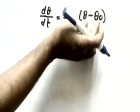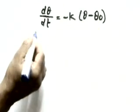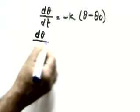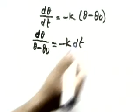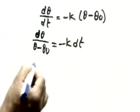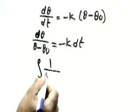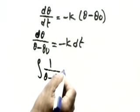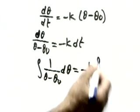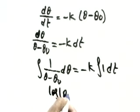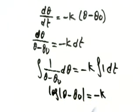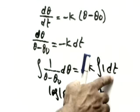Using the differential equation method, we separate the variables — bring θ on one side and t on the other. So dθ/(θ − θ₀) = −k dt. Integrating both sides: ∫ 1/(θ − θ₀) dθ = −k ∫ dt. Since the integration of 1/x is log x, this gives log|θ − θ₀| = −kt + c.